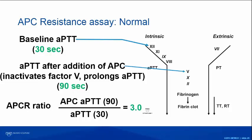Anything that affects the baseline APTT will render this ratio invalid — factor deficiencies, heparin, lupus anticoagulants, factor inhibitors. In the first-generation assay, that was a real problem leading to many DNA-based tests for indeterminate ratios. With the second-generation APC resistance assay, we mix the patient's plasma in factor V–deficient plasma, replacing any deficient factor. It includes a heparin neutralizer and a 1:5 dilution to dilute out the lupus anticoagulant, which takes care of many abnormal results.